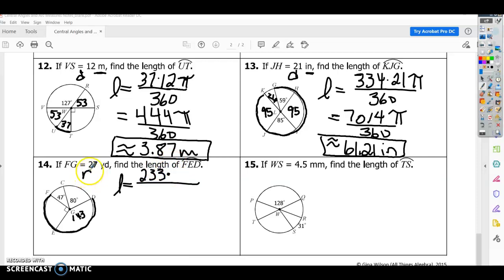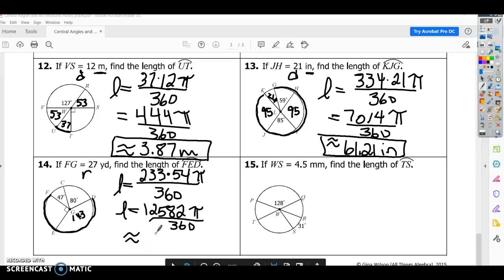And this time it's our radius. So we have to double 27 to get the diameter. So 54 pi over 360. And I'll multiply 233 times 54. I get 12,582 pi. I'm going to multiply that by pi and divide by 360.